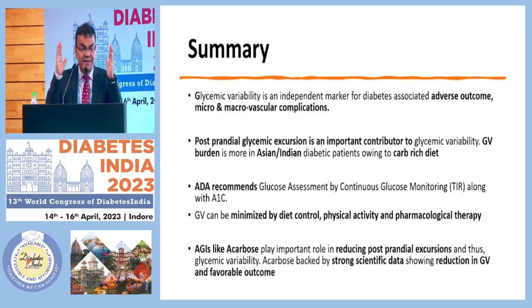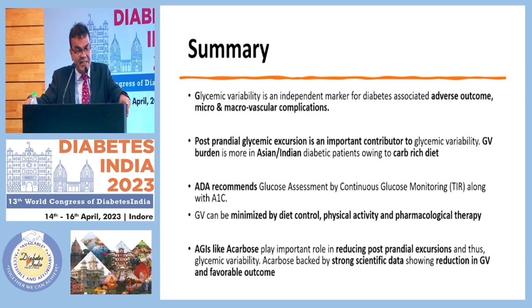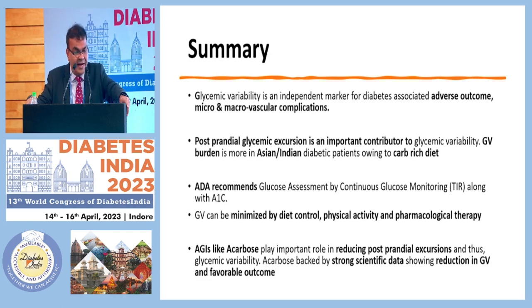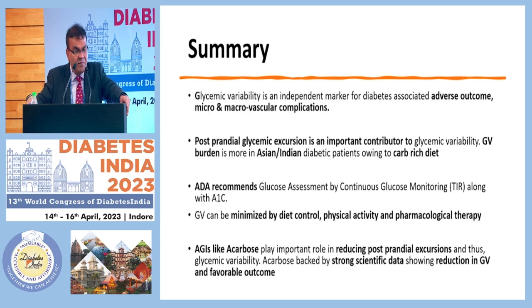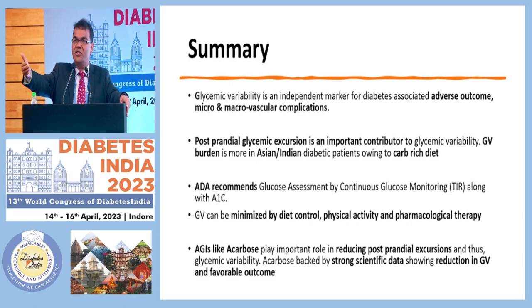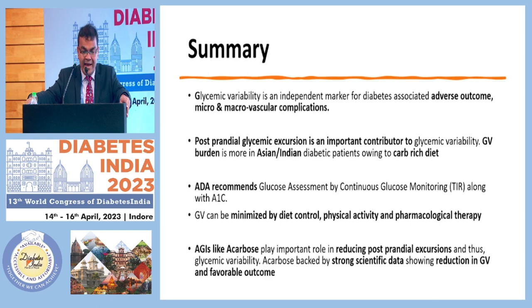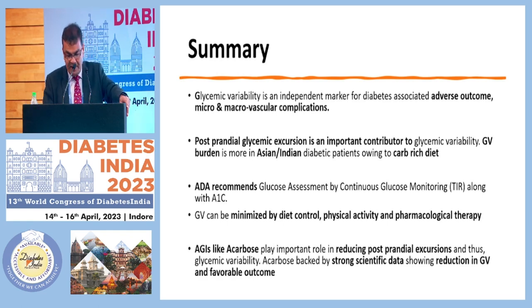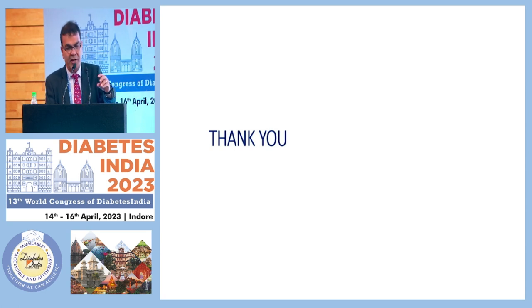To summarize: glycemic variability is an independent marker for adverse diabetic outcomes including micro- and macrovascular complications. Postprandial glycemic excursion is an important contributor to glycemic variability, and the burden is greater in Asian and Indian diabetic patients due to our rich carbohydrate diet. ADA recommends glucose assessment by CGM and achieving time in range alongside HbA1c. Glycemic variability can be minimized by diet control, physical activity, GLP-1 therapy, and alpha-glucosidase inhibitors — and acarbose, backed by strong scientific data, plays an important role in reducing postprandial excursion and glycemic variability. Thank you to the scientific committee and chairperson for this opportunity.